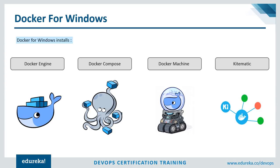When you install Docker, these components are also installed automatically. First we have the Docker engine. Whenever we say Docker, we actually mean Docker engine. The Docker engine basically contains the Docker daemon, a REST API for interacting with the Docker daemon, and the command line interface client that communicates with the daemon. The Docker daemon accepts Docker commands such as Docker run, Docker build, and all of that from the Docker client.